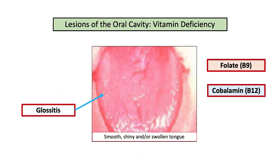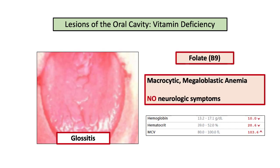Another key oral manifestation of vitamin deficiencies is glossitis — a smooth, shiny tongue, which may also be described by swelling of the tongue. The two main deficiencies that cause glossitis are B9, folate, and B12, cobalamin. Folate deficiency may present with glossitis, but the vignettes will likely include the presence of macrocytic anemia, manifested by an elevated MCV, and the absence of neurologic symptoms to distinguish from B12 deficiency.